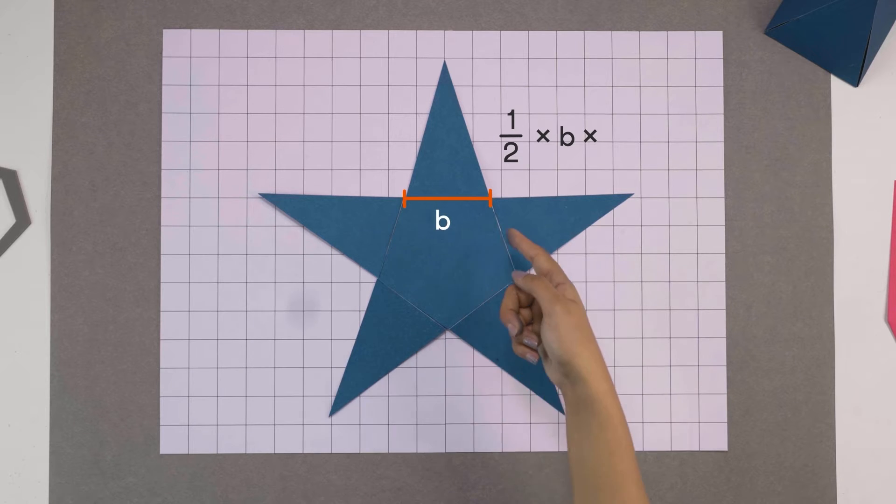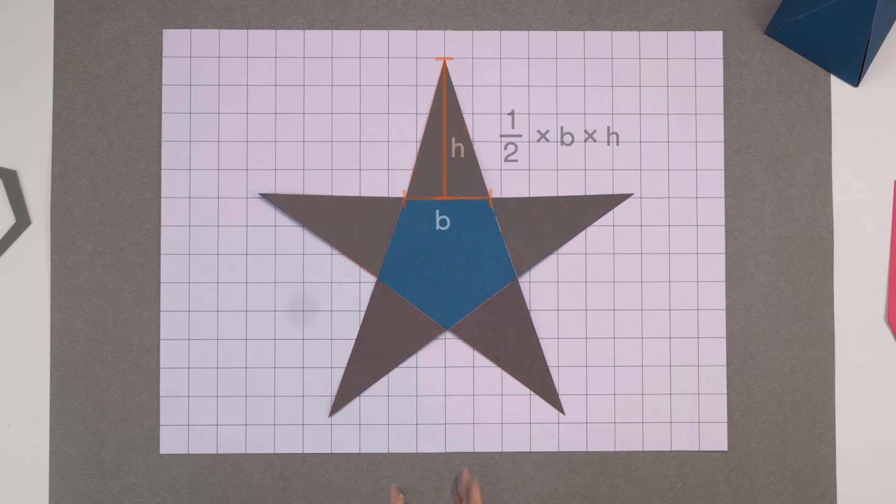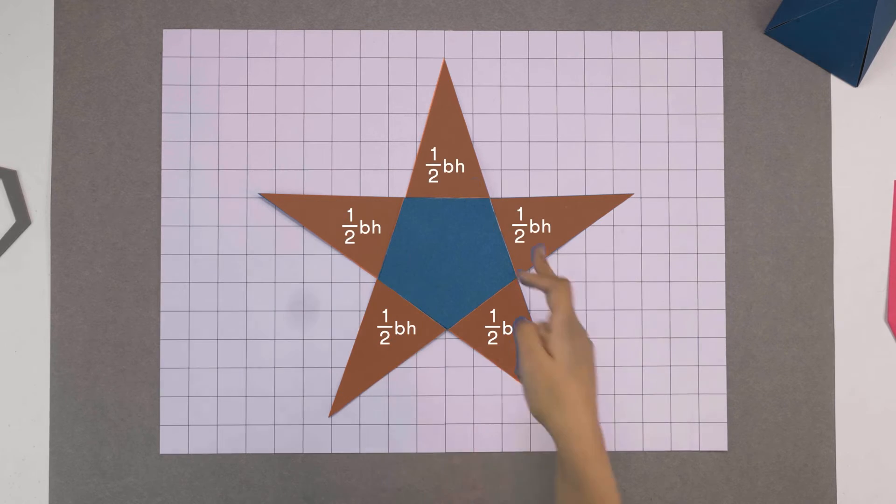The area of each triangle is half times its base times its height, and its lateral surface area is the sum of all their areas.